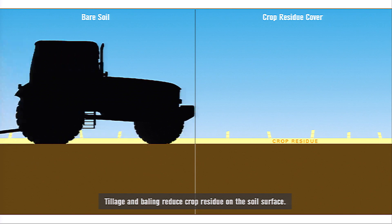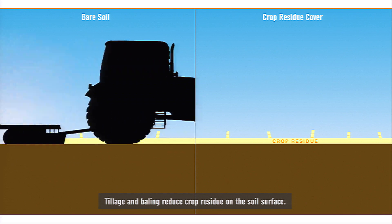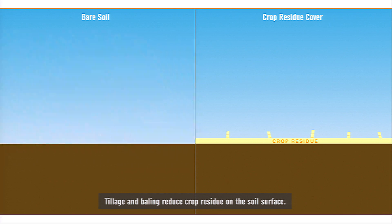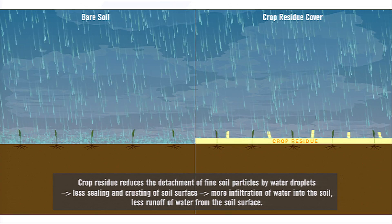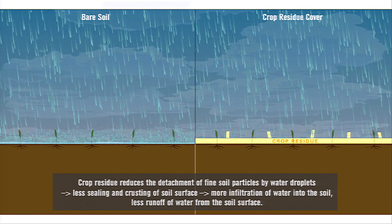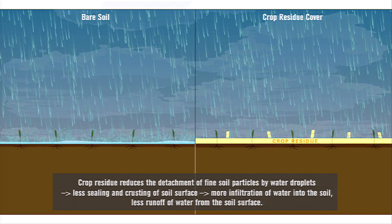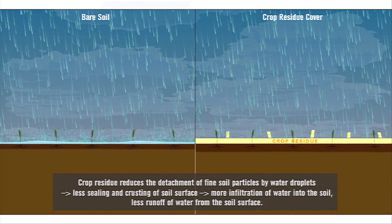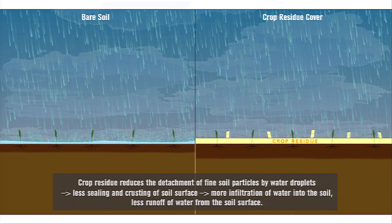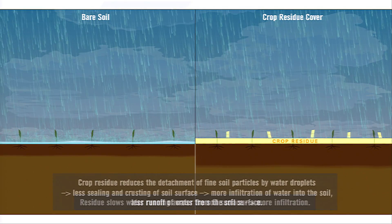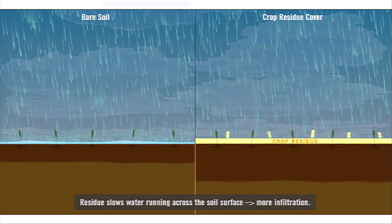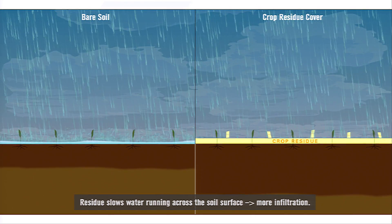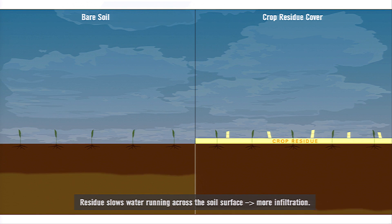Practices such as tillage and baling reduce crop residue on the soil surface, affecting the amount of water available to grow a crop. Crop residue reduces the detachment of fine soil particles by water droplets, resulting in less sealing, more infiltration of water into the soil, and less runoff of water from the soil surface. The residue also slows down water that is running across the soil surface, resulting in even more infiltration of water into the soil.